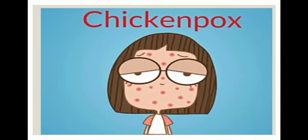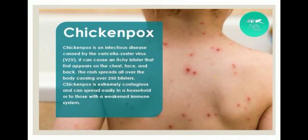Next disease: chicken pox. Chicken pox is an infectious disease caused by the Varicella-Zoster virus. It can cause an itchy blister rash — blister means skin covered by rashes or liquid-filled bubbles. These first appear on the chest, face, and back, and the rash spreads all over the body causing over 250 blisters.